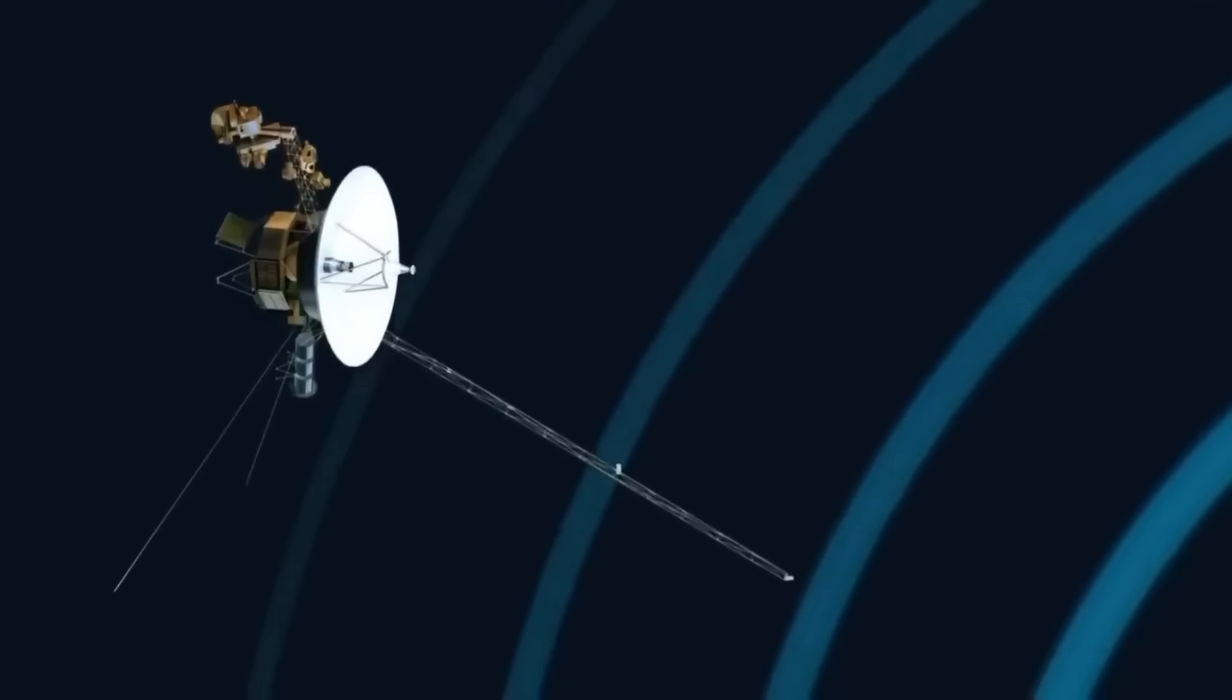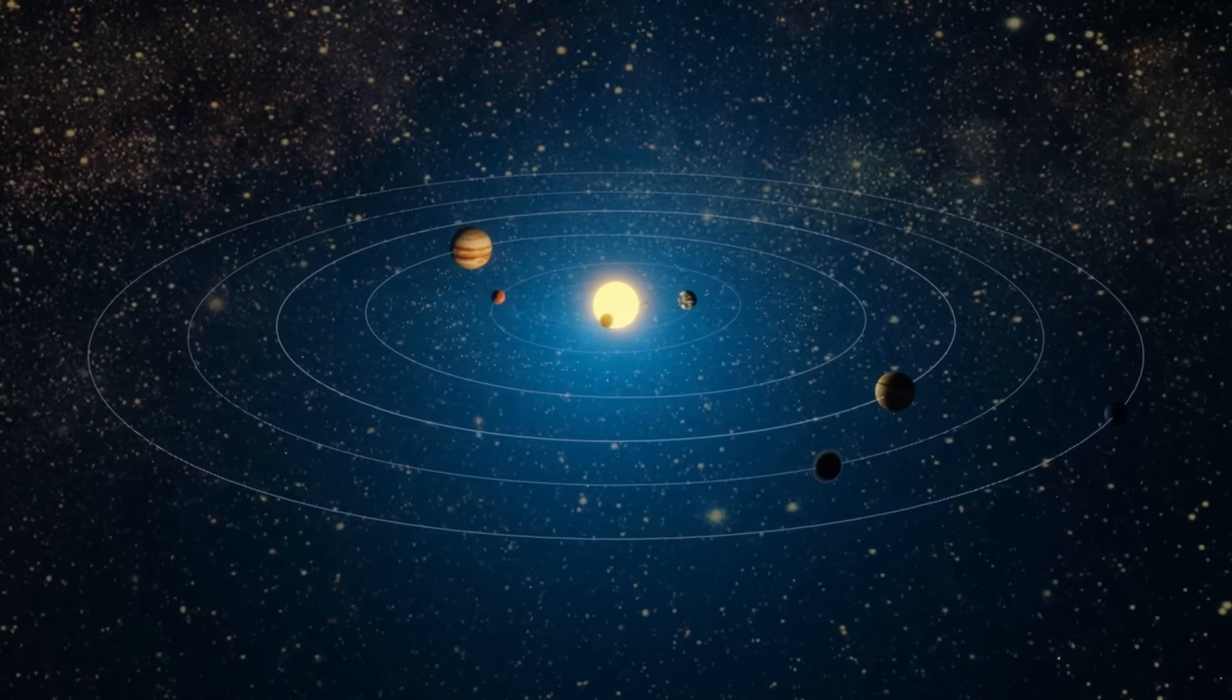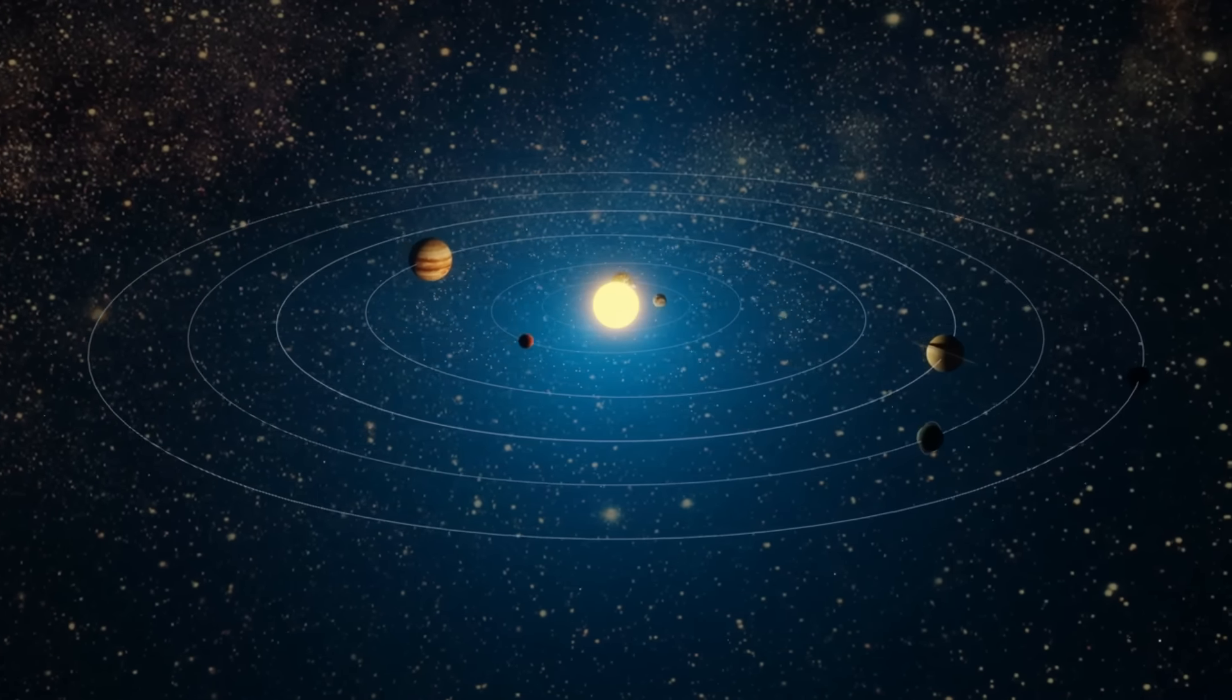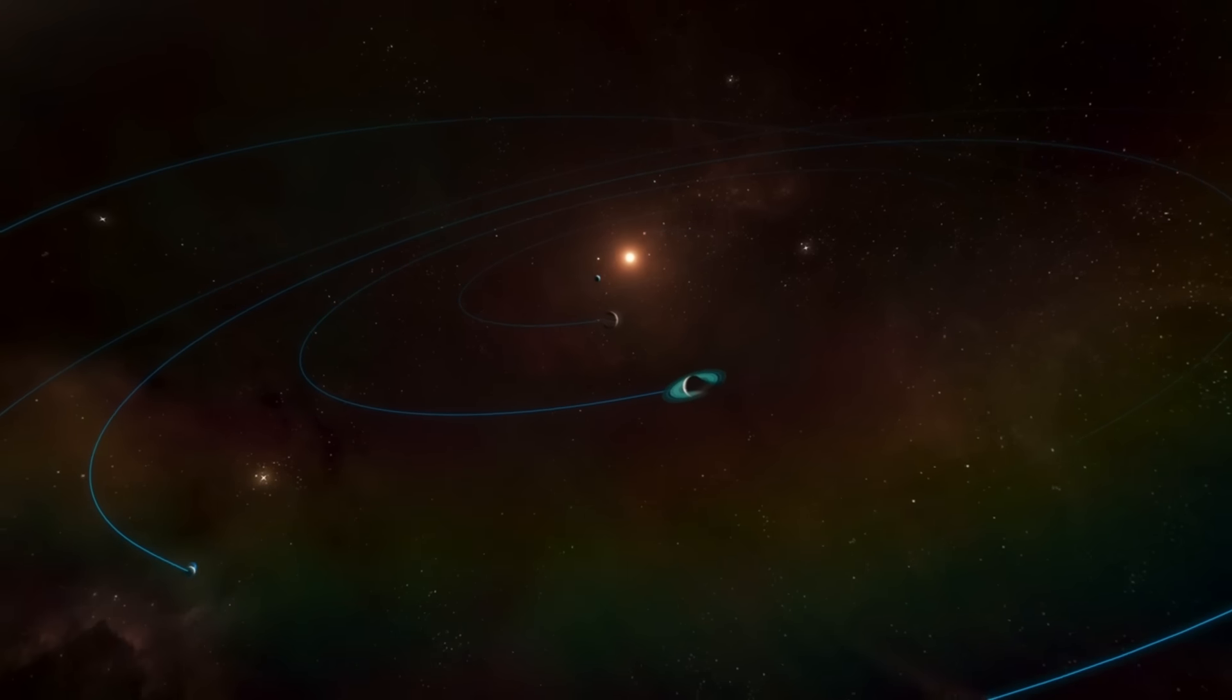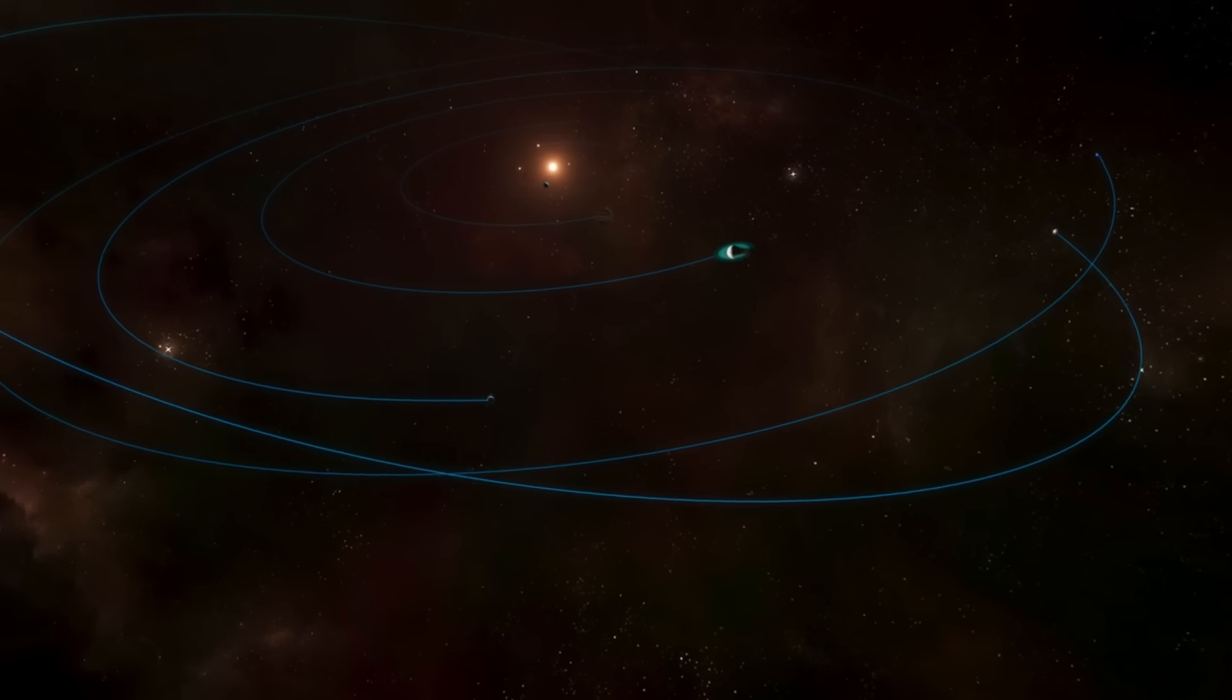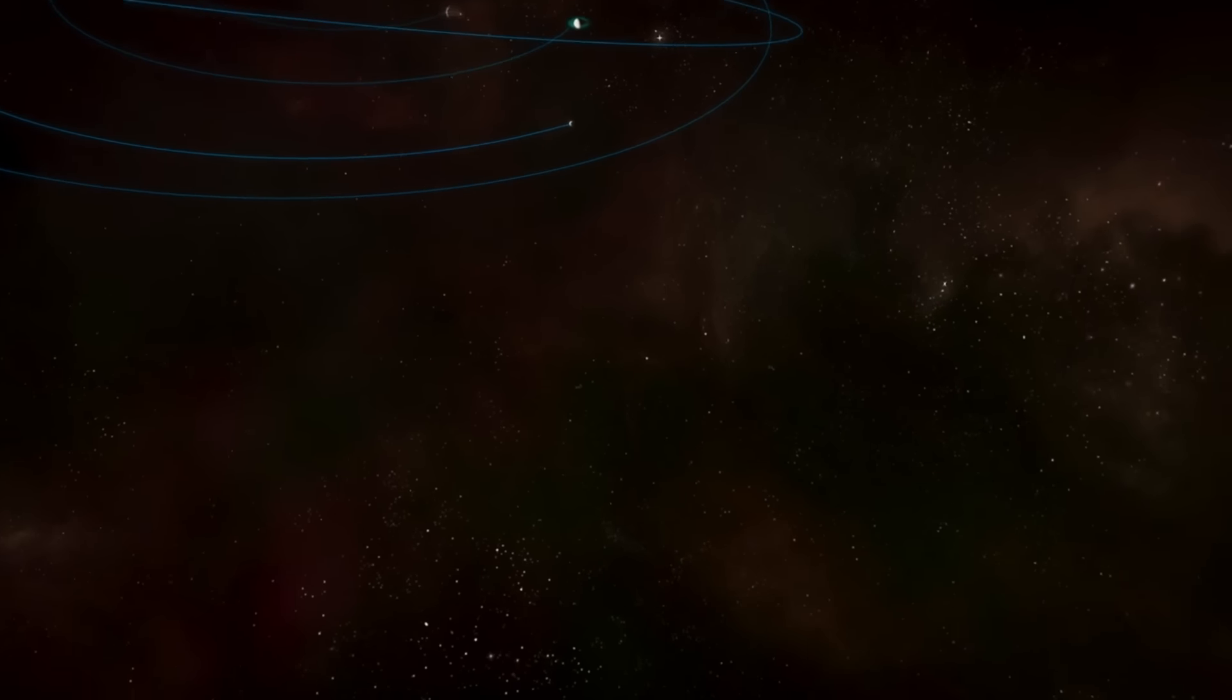By 2004, both probes were extremely far from home and had arrived at what might be termed the far limits of our solar system. They had arrived at the termination shock, a location in our solar system.